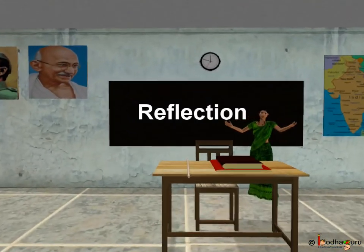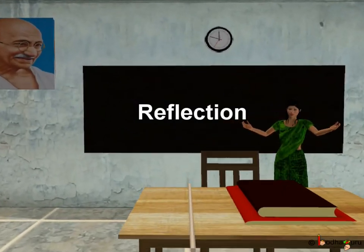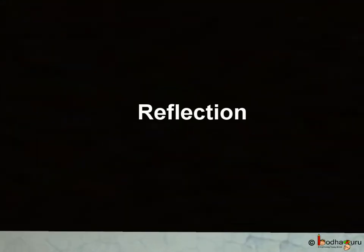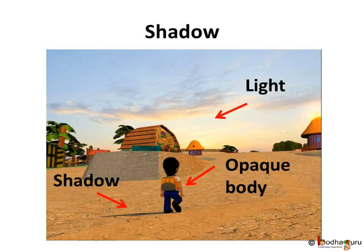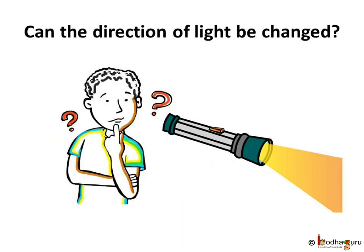Good morning children. Now we shall learn about the reflection of light. We already know that light travels in a straight line. And when the light is obstructed by opaque objects, the shadow is formed. Have you ever thought — is it possible to change the direction of light? Let us find it out.